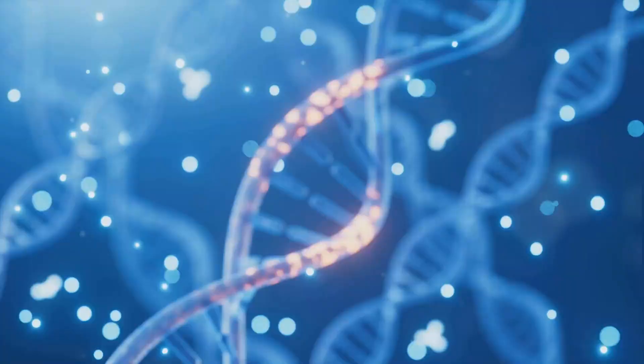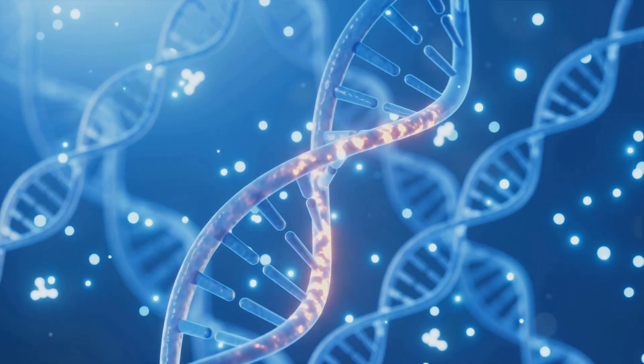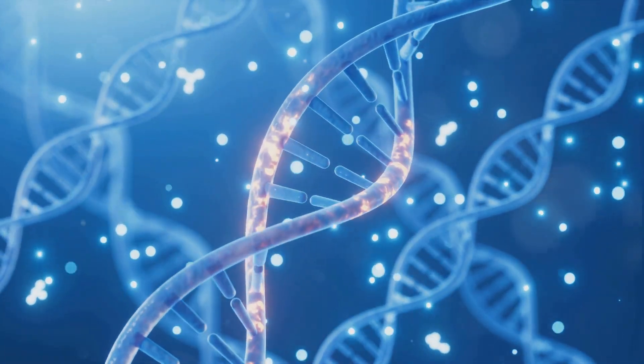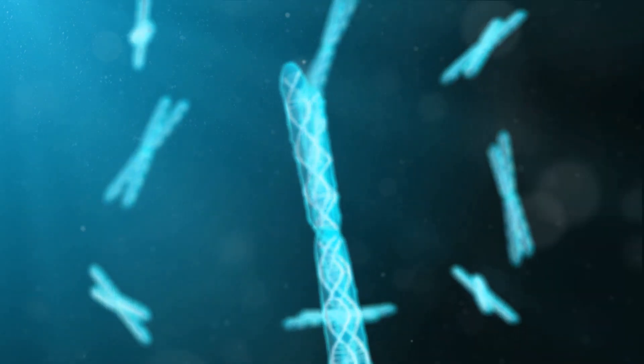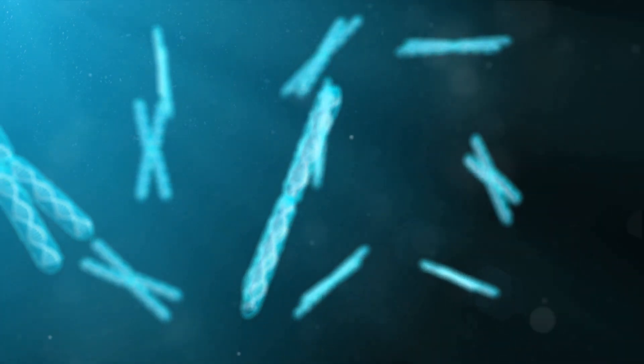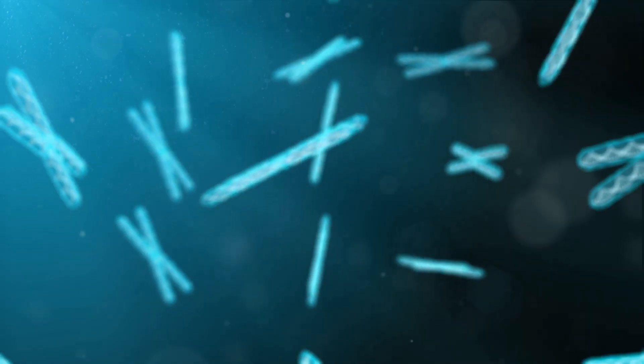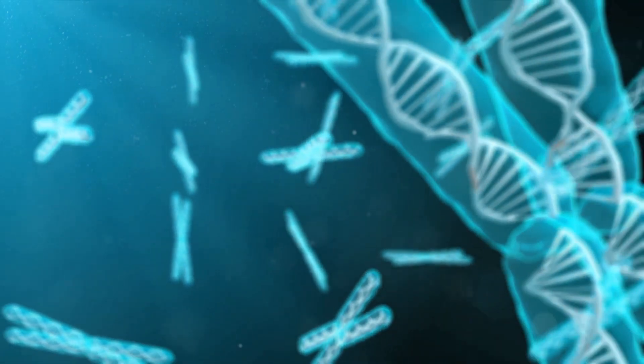The third pathway is mismatch repair, or MMR. This pathway corrects errors that escape the DNA polymerase proofreading mechanism during DNA replication. It is essentially the cell's quality control, catching and fixing replication errors.